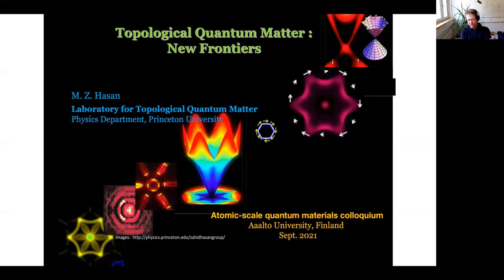Professor Hassan's research is focused on fundamental condensed matter physics, either searching for or in-depth exploration of novel phases of electronic matter. You must have heard of his work on topological insulators, including the classic papers on bismuth antimony and bismuth selenide, where they used angle-resolved photoelectron spectroscopy to directly visualize the topological surface states.